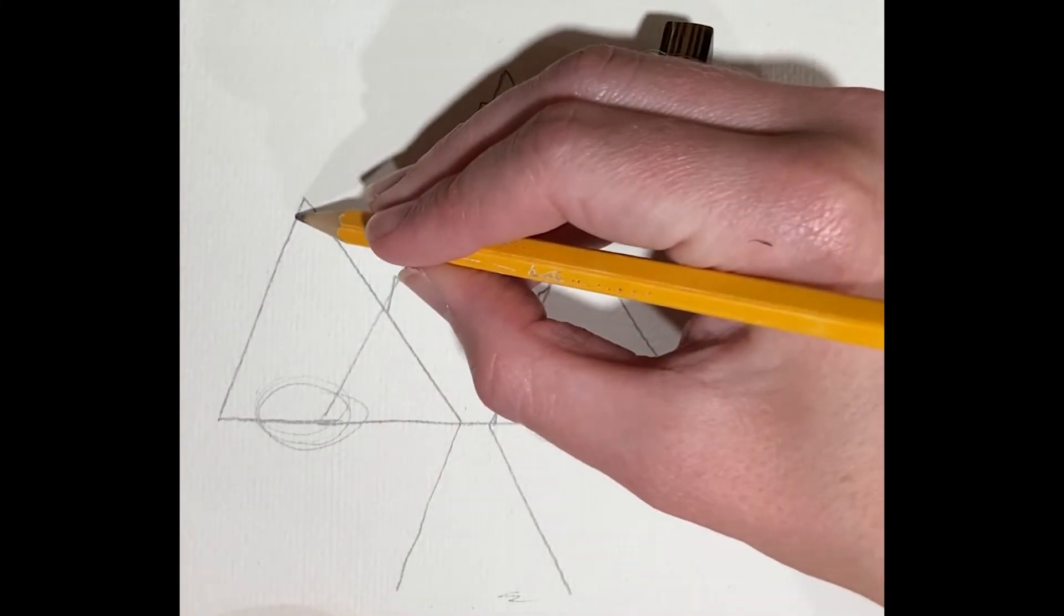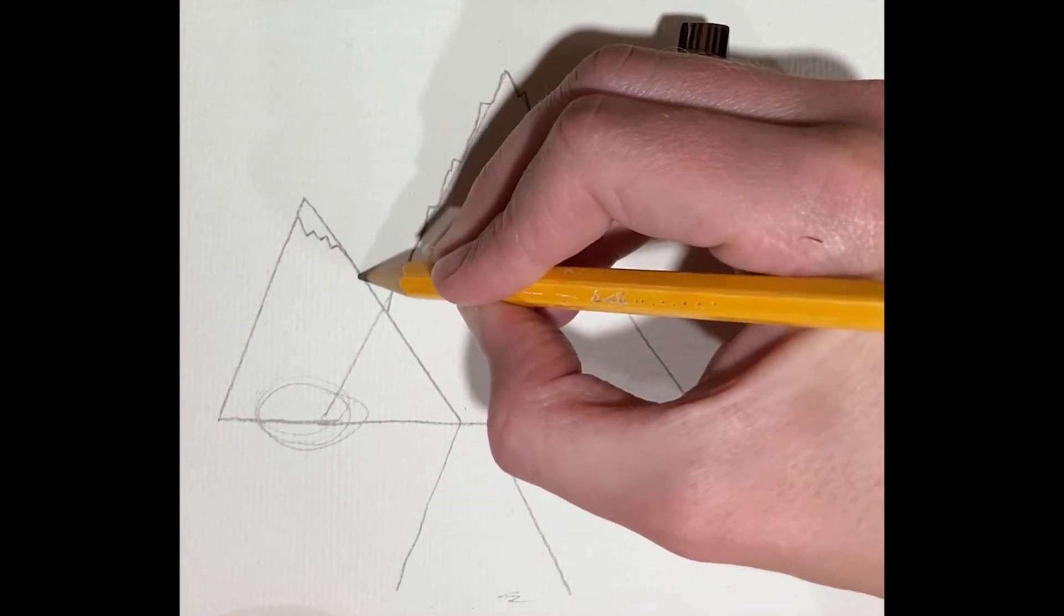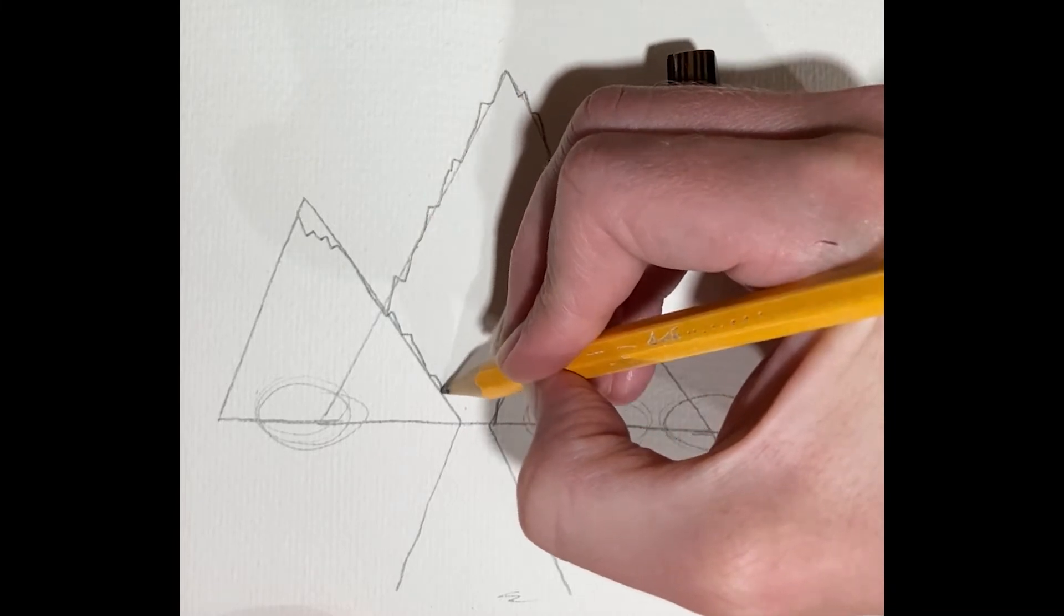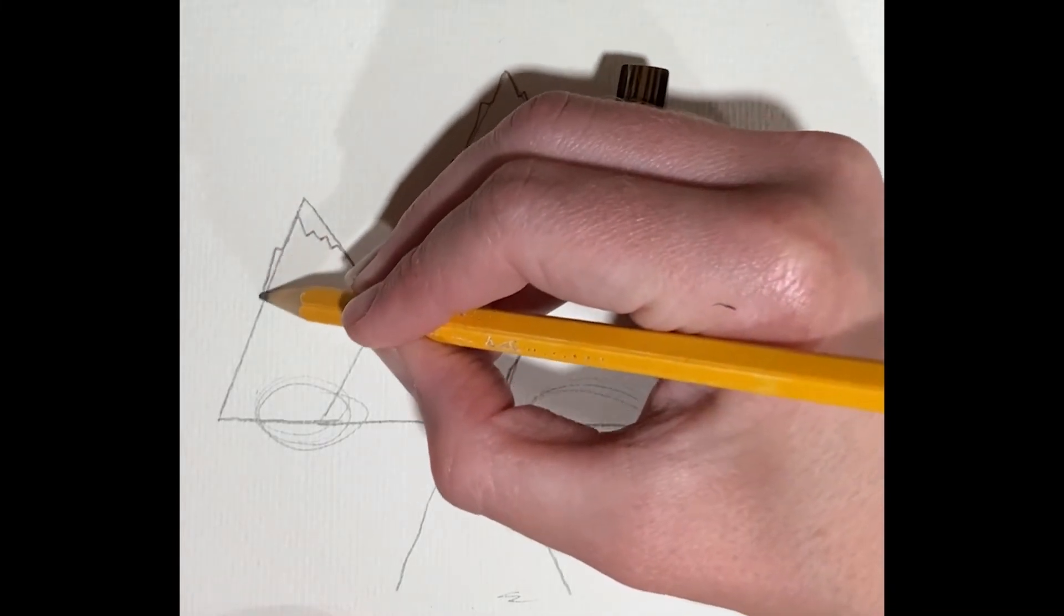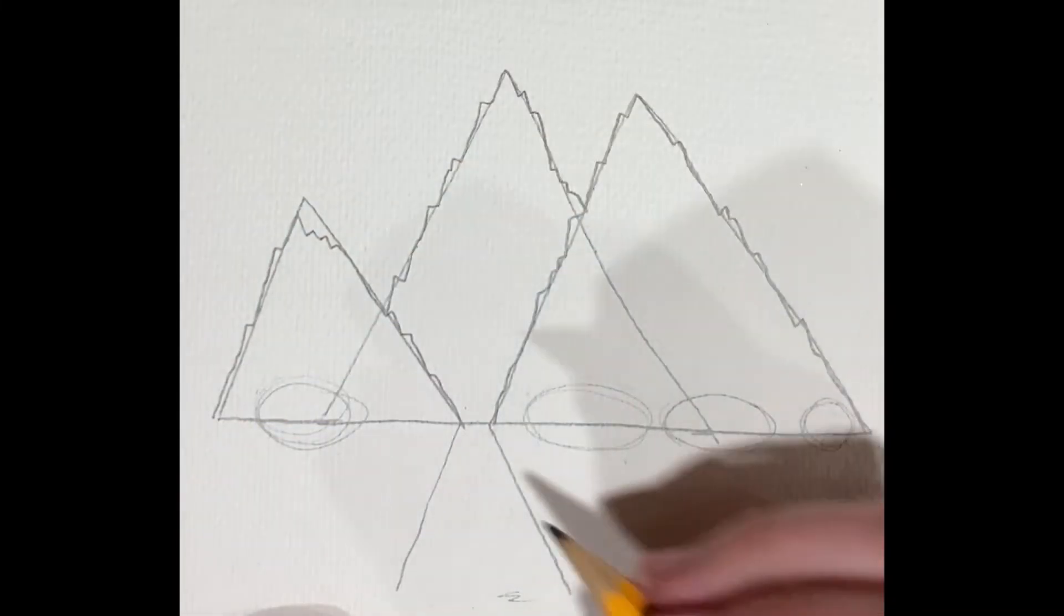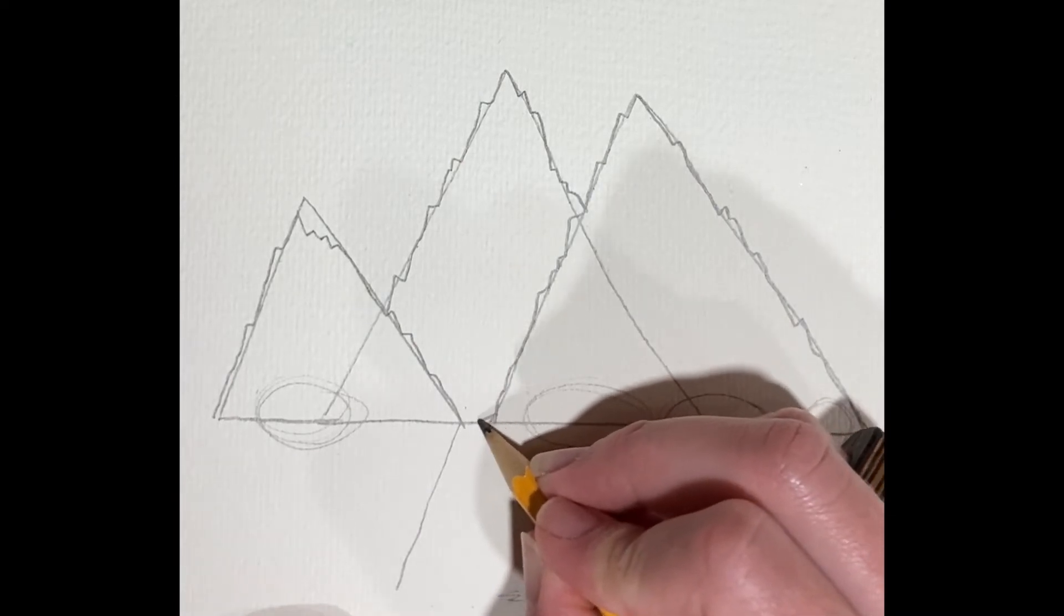And you'll see here where I've stopped. So I've decided that these two triangles in front, these two mountains, are going to be closer to me. The biggest one is going to be further back, so we won't see all of it.